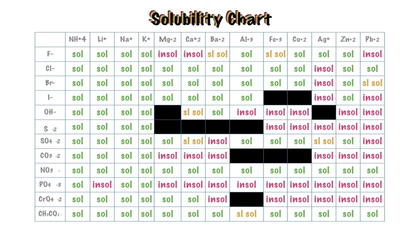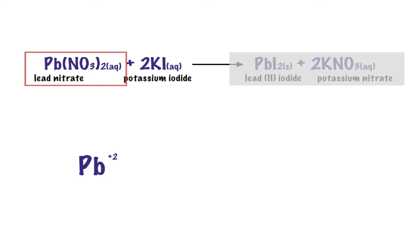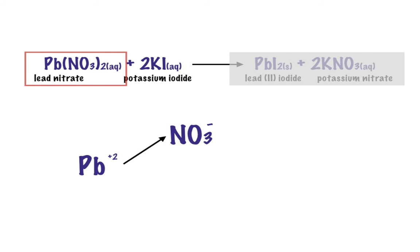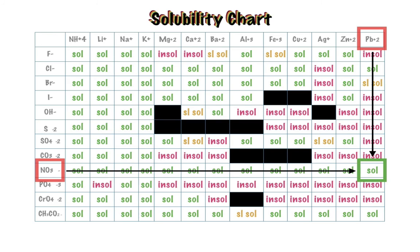To understand how to use this solubility chart, we're going to look again at our reaction. Let's take a close look at lead. We already know that lead, when mixed with nitrate in an aqueous solution, remained in an aqueous solution — every time lead bumped into nitrate, nothing happened. On the chart, I look for lead and nitrate — I go down each row and column to see where they meet. And you'll see that it's soluble, which means lead and nitrate combined together dissolve in aqueous solution. That's why when you mix it with water, it still looks like water.